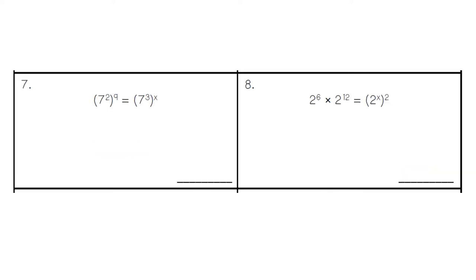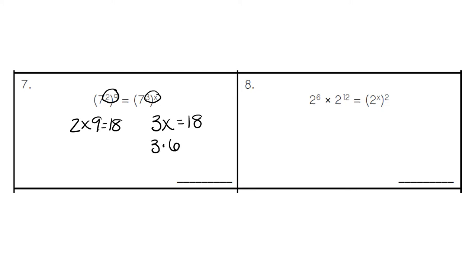In number 7, we're going to take our exponents and multiply them: 2 times 9 to get an answer of 18. We need the other side to also give us an answer of 18. So 3 times what number gives us 18? That would be 3 times 6, so 6 is our missing exponent.